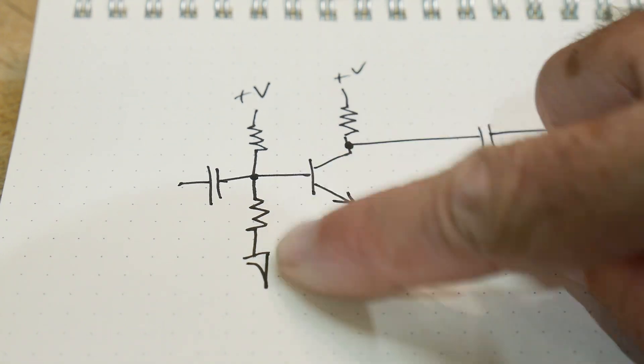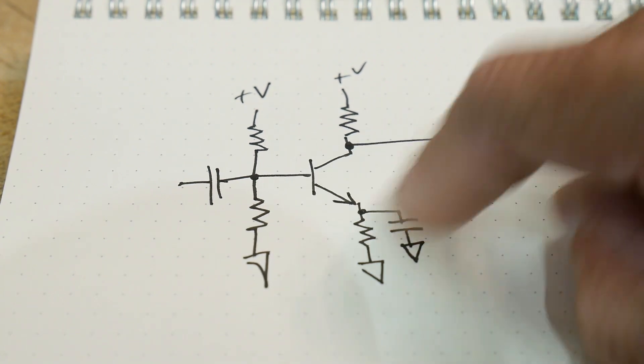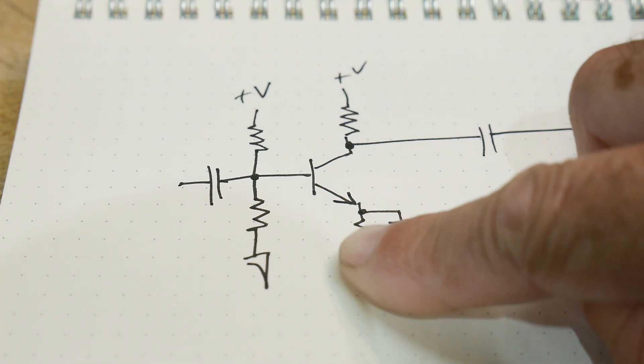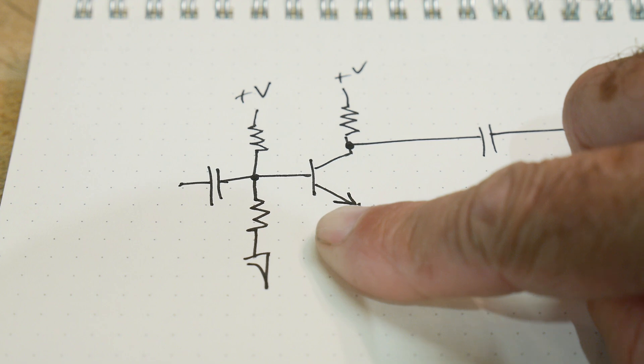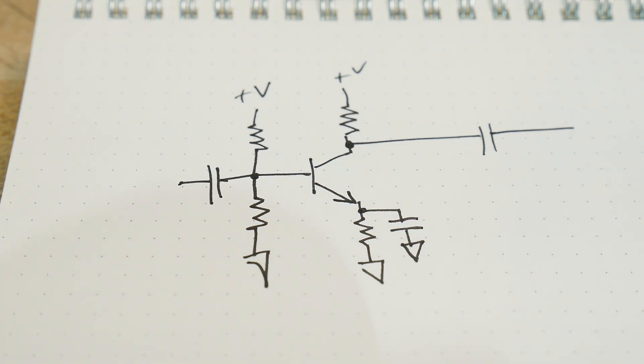So we're going to set up some type of biasing on the input and set this at a point where the thing's happy. Now if you don't have this down here, then there is problems with the transistor with temperature or with frequency or part-to-part variations and things like that.